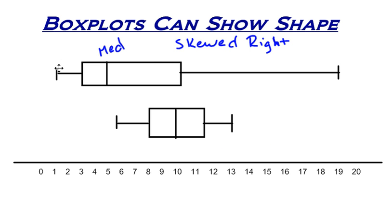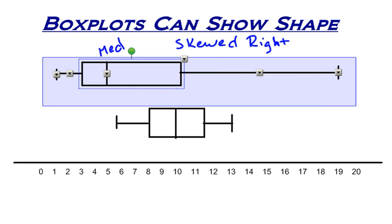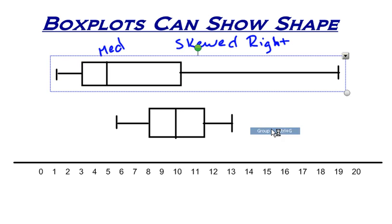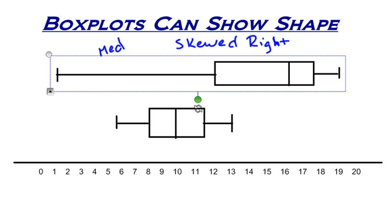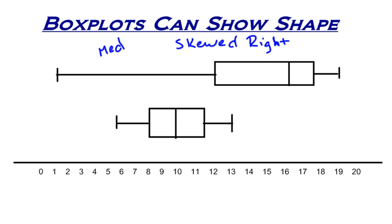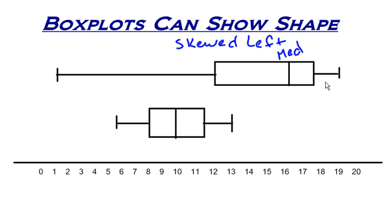Now, if this was flip-flopped and I took all of this and it was flipped the other direction, no longer would this be skewed right. This distribution would be skewed left, because the median is closer to the shorter whisker and the long whisker is on the left-hand side. So that would be skewed left.